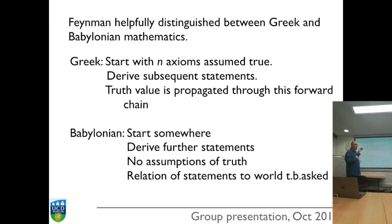Feynman, the physicist, helps us here. He helps us in distinguishing between Greek mathematics and Babylonian mathematics, which is a nonce distinction he's taking. It's kind of nice because Pythagoras did go to Babylon as well as Egypt. In the Greek system we start with axioms assumed to be true and we derive subsequent statements and truth values propagated through this forward chain. If your original statements are true, everything you derive from them using rules of logic and inference is also true.